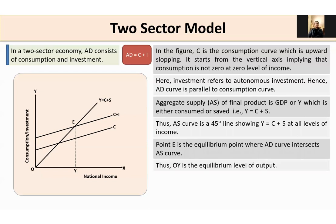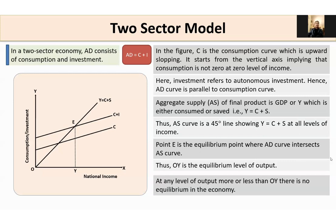Thus, OY is the equilibrium level of income or output. At any level of output more or less than OY, there is no equilibrium in the economy — that is, there is disequilibrium in the economy.